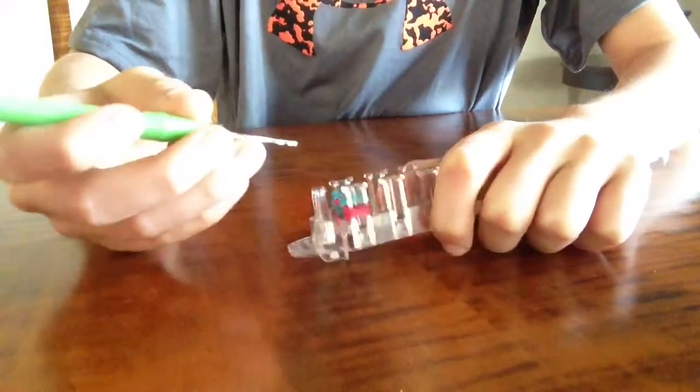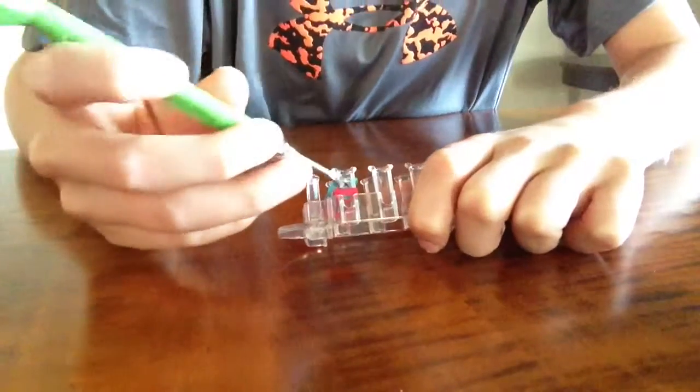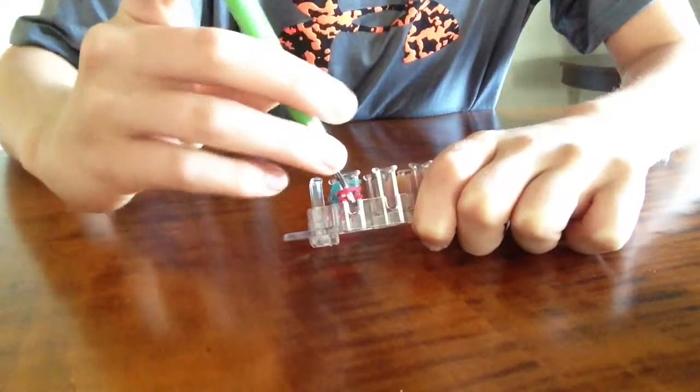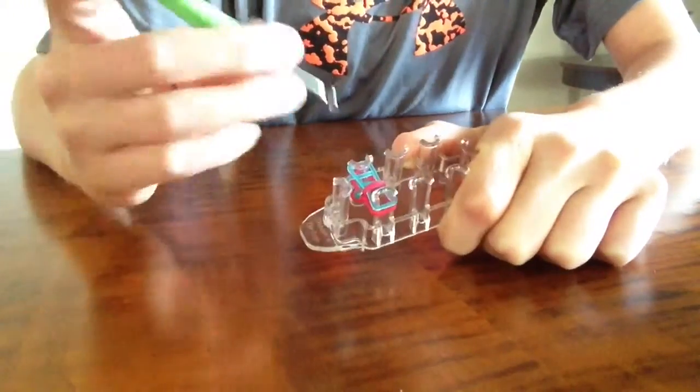And now we're going to do an inverted stitch. So we're going to go in front of the first, behind the second, and bring the third band in between on both sides.